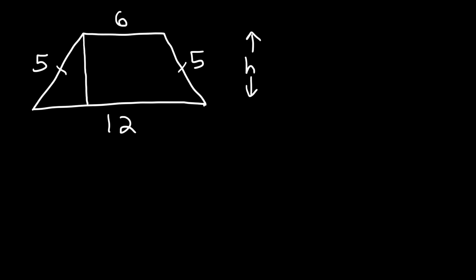So I'm going to break the trapezoid into a rectangle and two triangles. Now we already have the length of the rectangle is 6. And these two sides are equivalent. They share the same height, so therefore they have to have the same base. Now 12 minus 6 is 6, and we need to divide it by 2. So that means this side has to be 3, and that side has to be 3. So all three sides have to add up to 12.